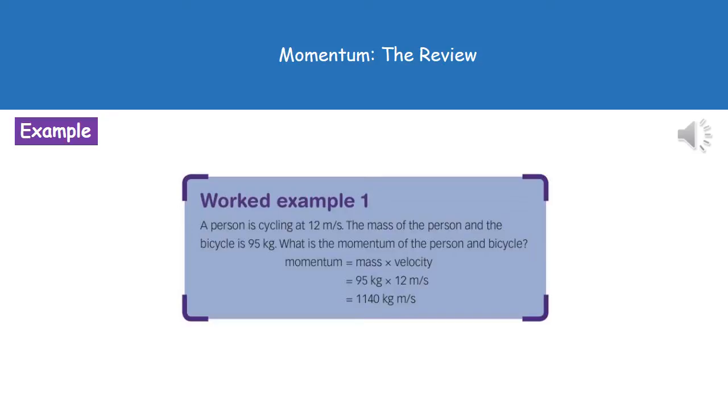Then looking through our question, we can see that the velocity is 12 meters per second, and the mass is 95 kilograms. So substitute our numbers in, and we get 95 times 12, put that into your calculator, and we get our answer of 1140.